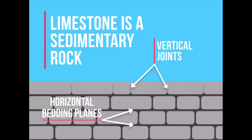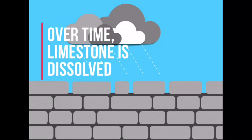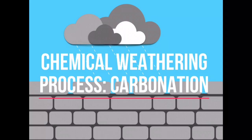Limestone is a sedimentary rock laid down in layers or strata with vertical joints and horizontal bedding planes. When rain falls, it picks up carbon dioxide in the atmosphere, which forms a weak carbonic acid. Over time, this dissolves the calcium-rich limestone rock. This process is known as carbonation.